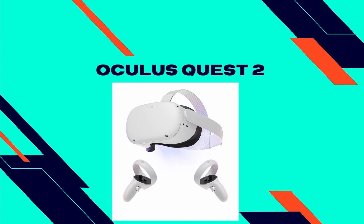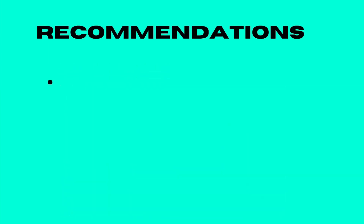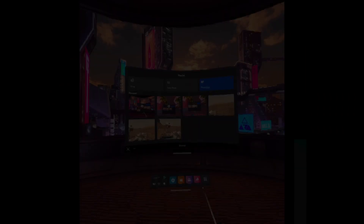The Oculus Quest 2 is a VR headset from Meta that includes a headset and two controllers. I recommend getting the Elite Strap, an optional accessory that hooks onto the headset, providing a spacer and adjustable headband for more comfort and better weight distribution. Make sure students have lots of room to move around and no objects nearby. Also make sure students use the straps on the controllers, as it's easy to accidentally fling them.